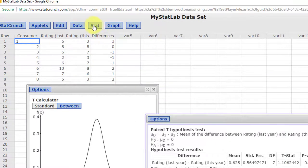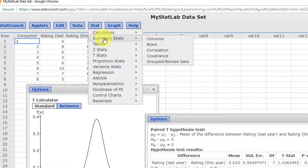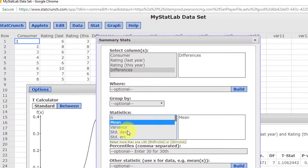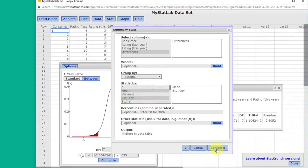There's my differences. So I go back to stat, summary stats, columns, and I just want to click on my differences. And I want to get the mean, hold down the control key, standard deviation, and click compute.